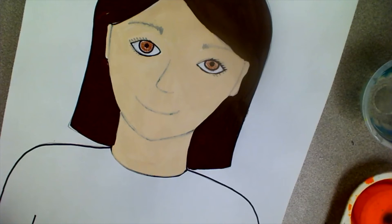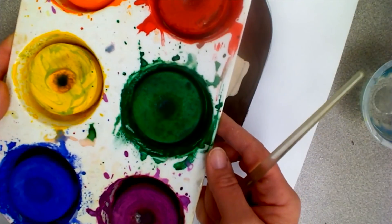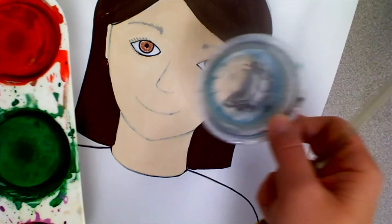Once you're finished painting your hair, you need to get tempera cakes and paint your clothes. Paint them whatever color you want them to be.